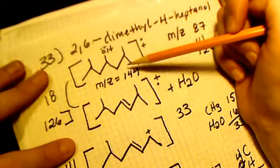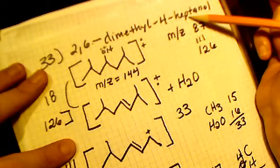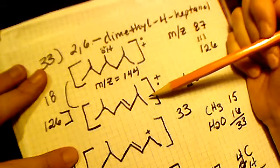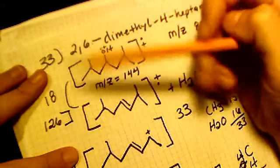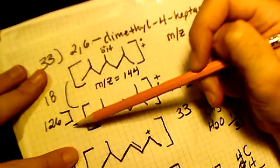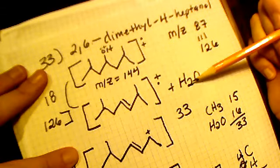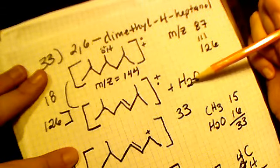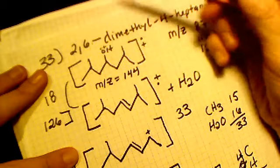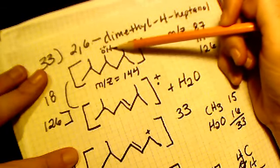We went from 2,6-dimethyl-4-heptanol to this molecule - I'm not going to name it right now - with a mass of 126. We lost water. Looking up here, there's one hydrogen and one oxygen, so we need to lose this OH molecule and then one H. Here's what I think happened.